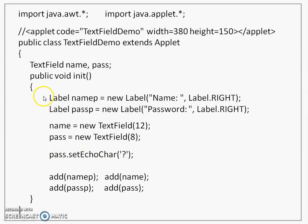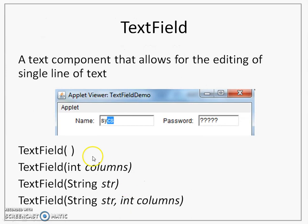I have created two labels and two text fields. Next, we have to add them by calling add in sequence. First I add the name label, second the name text field, third the password label, and fourth the password text field. Once I do that, this is the effect you are going to get — a label and name text field, followed by a label and the password text field.